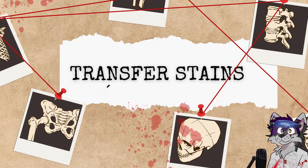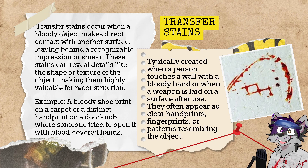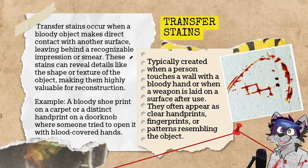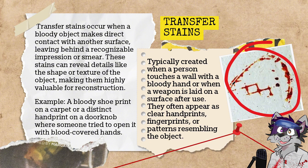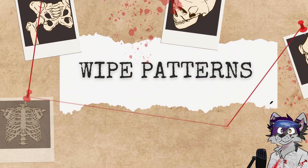Next we have transfer stains. Transfer stains occur when a bloody object makes direct contact with another surface, leaving behind a recognizable impression or smear. These stains can reveal details like the shape or texture of the object, making them highly valuable for scene reconstruction. An example would be a bloody shoe print on a carpet or a distinct handprint on a doorknob where somebody tried to open it with blood-covered hands. If you have blood on the bottom of your shoe and step on a floor, that blood transfers to the floor leaving a mark we can use to identify the shoes worn.